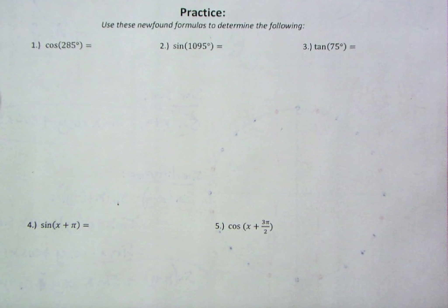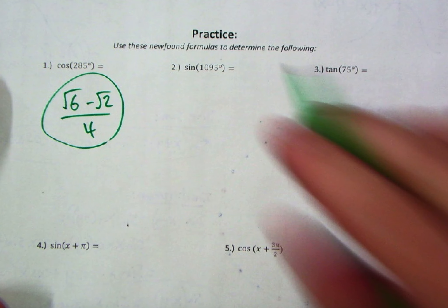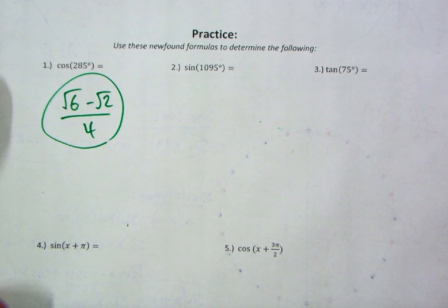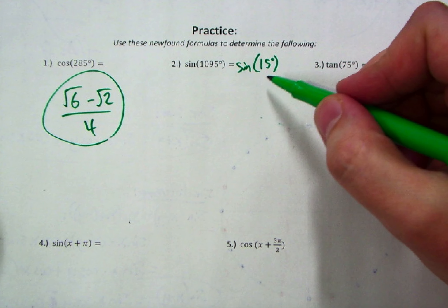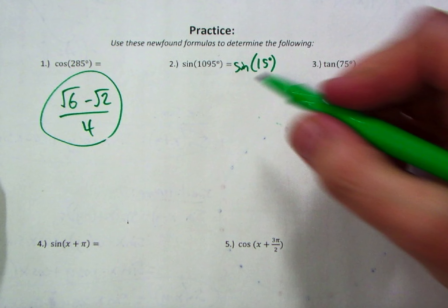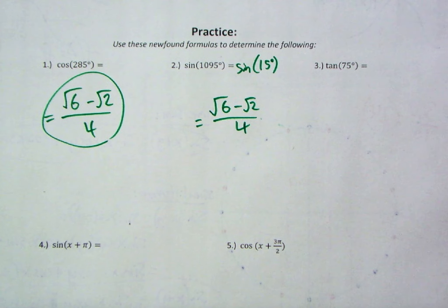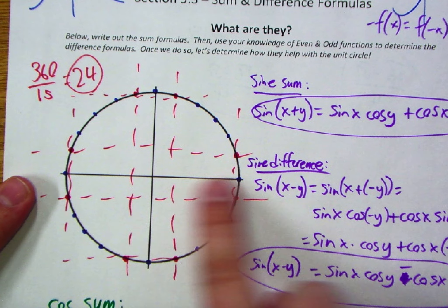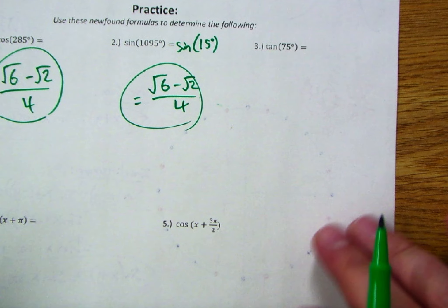For number one, you should end up with (√6 − √2)/4, which we calculated for cosine of 75°. For sine of 1095°: 1080 is three full rotations, so this is equivalent to sine of 15 degrees. You could use sine of 45 minus 30, or sine of 60 minus 45, or many other combinations — and you should end up with (√6 − √2)/4 as well. This y-value just above the x-axis mirrors the x-value just to the right of the y-axis.